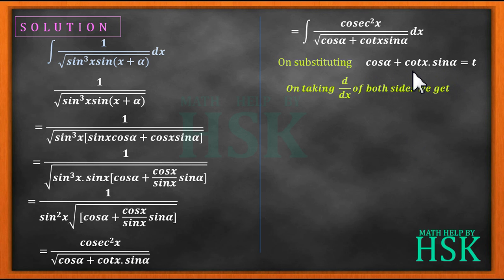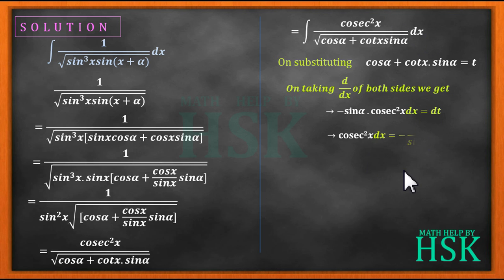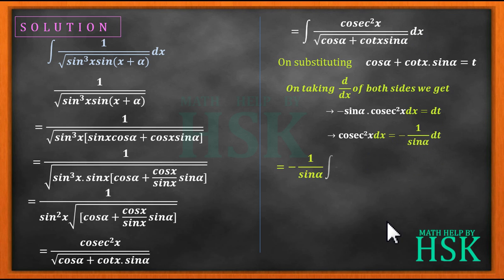The differentiation of the constant cos α is 0. The derivative of cot x is minus cosec²x, and sin α is a constant, so we get: minus sin α · cosec²x dx = dt. Therefore, cosec²x dx = minus 1 upon sin α · dt.